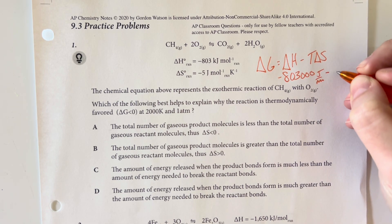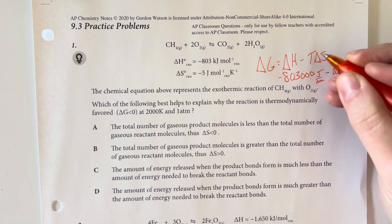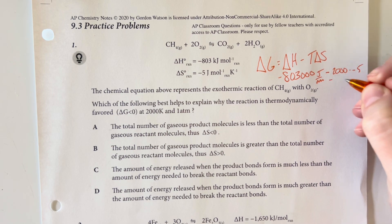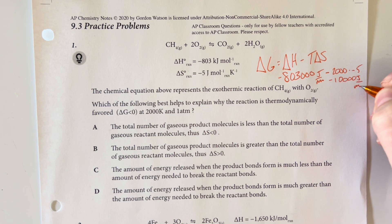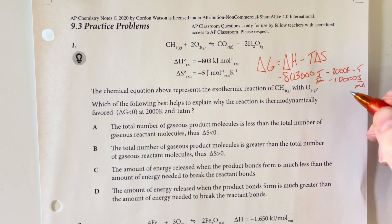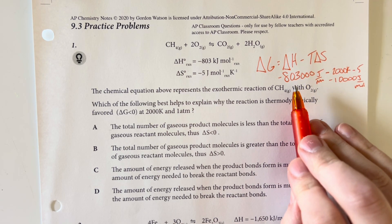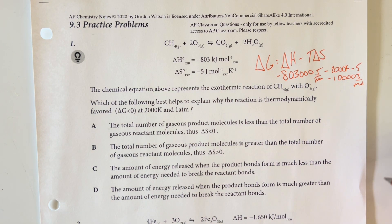Then minus 2000 Kelvin times our delta S, which is negative 5, giving me negative 10,000 joules per mole once the Kelvin cancels. So we have 803,000 minus 10,000 — that is still very much in the negative, so delta G is definitely still negative.